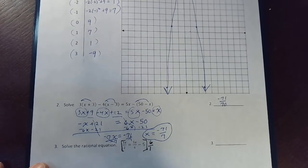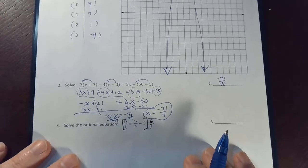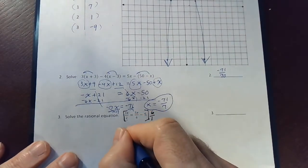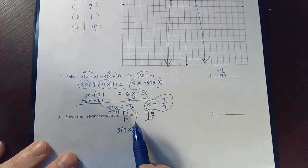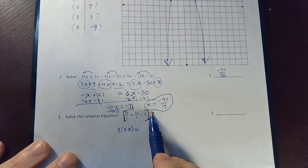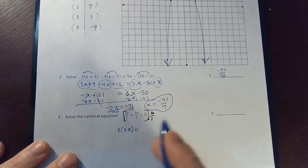So now, this 2 is going to cancel with a 6, 6 over 2, leaving a 3 on top. So 3 times 3x. So we'll get 3 times 3x equals—this 6 is going to cancel out with that 6, leaving us just 5x on its own.